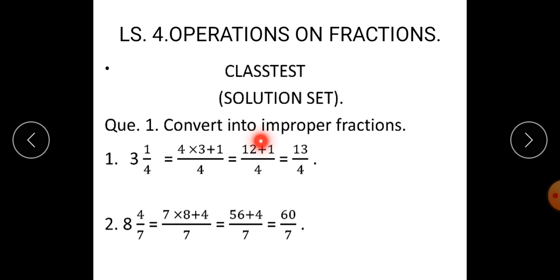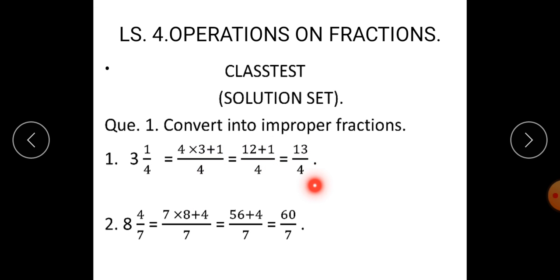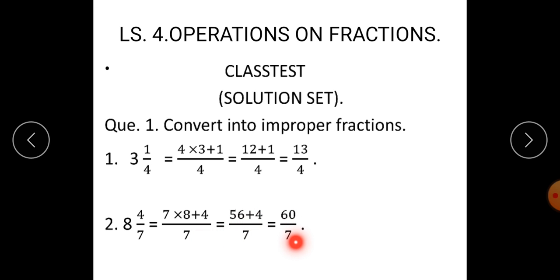Question number 1: Convert into improper fractions. Number 1: 3 integer 1 upon 4 is equal to 4 into 3 plus 1 upon 4. 4 threes are 12, plus 1 upon 4, is equal to 13 upon 4. Second one: 8 integer 4 upon 7 is equal to 7 into 8 plus 4 upon 7, is equal to 56 plus 4 upon 7, is equal to 60 upon 7. And therefore, here we have converted mixed numbers into improper fractions.